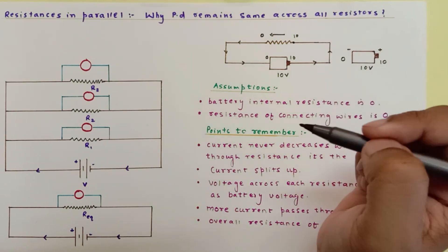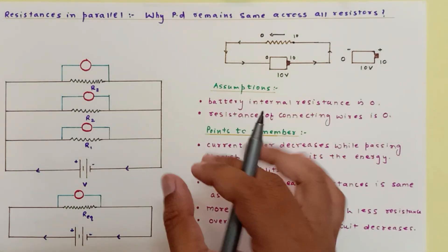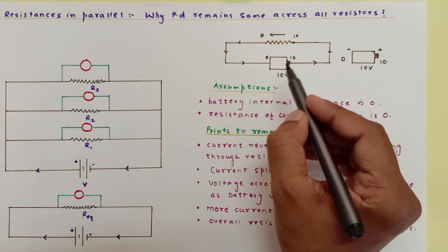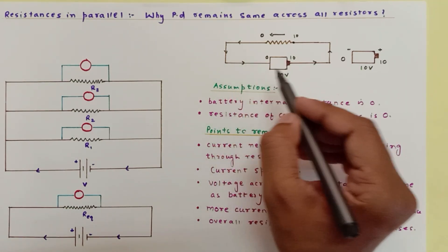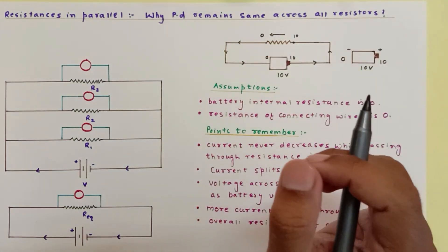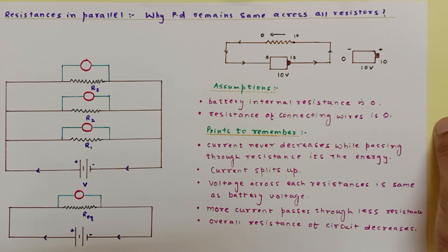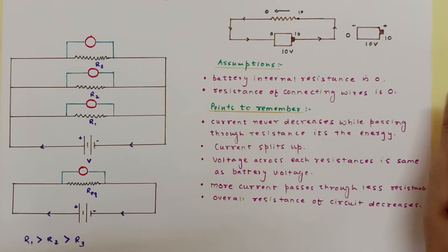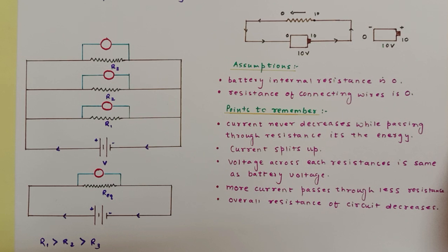The energy contained in the current decreases — we'll talk about that shortly. We've made a few assumptions: the battery has no internal resistance and the connecting wires also have zero resistance. This is practically not possible, but theoretically it's fine.